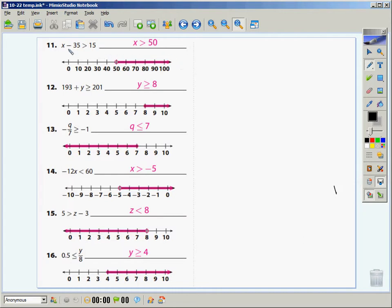Number 11. To get x by itself, where it says x minus 35 is greater than 15, you would have added 35 to both sides. When I did that, it would give me x is greater than 50. Open circle on the 50. It's getting greater, so it's going to go to the right. For number 12, it says 193 plus y is greater than or equal to 201. I want to get the y by itself. I've got to get rid of the 193. I would subtract it. It's going to leave y is greater than or equal to 8. It's a filled in circle on the 8 this time, because it can be equal to it. And because it's getting greater, I'm going to go to the right.